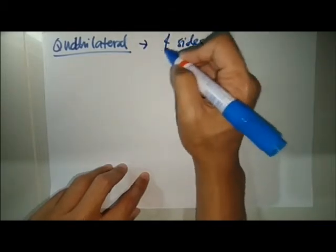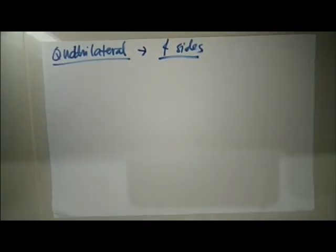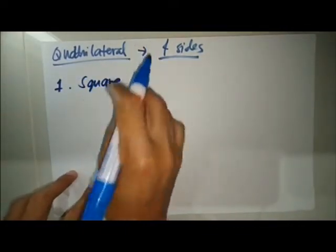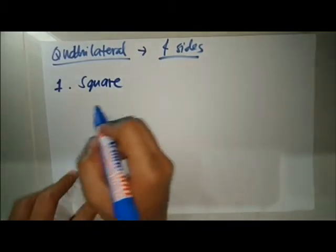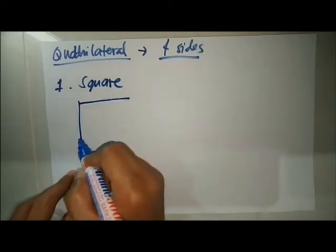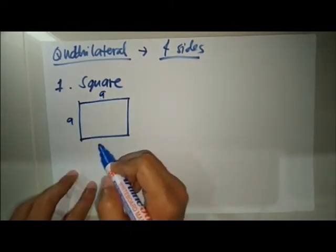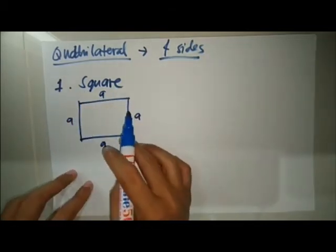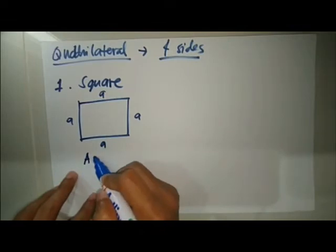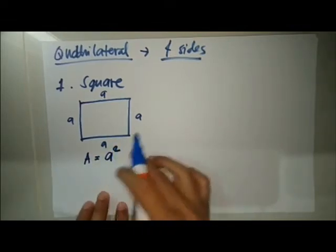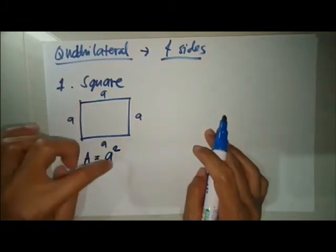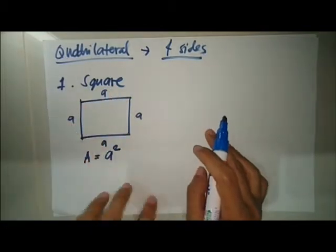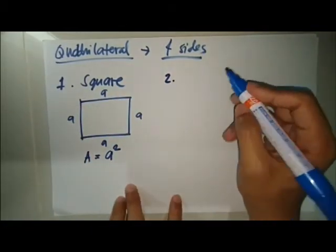A square has four equal sides. To visualize, say a square has a side length of a. Since all sides are equal, the area of the square is a squared. We multiply or square the length to get the area of the square. So you have four equal sides.